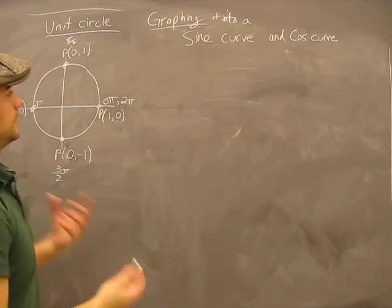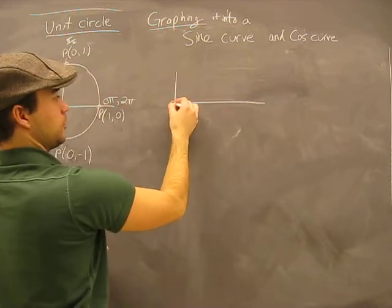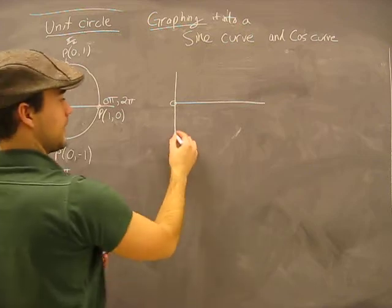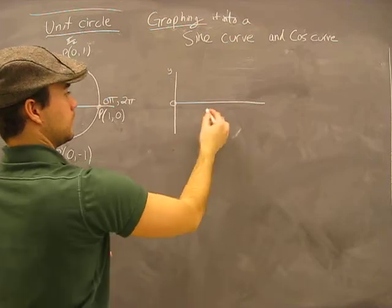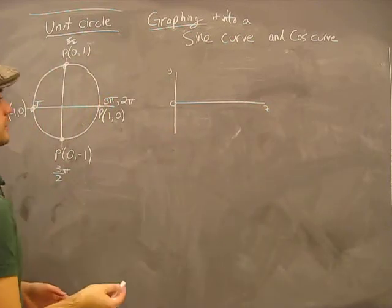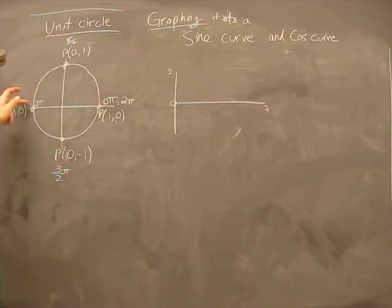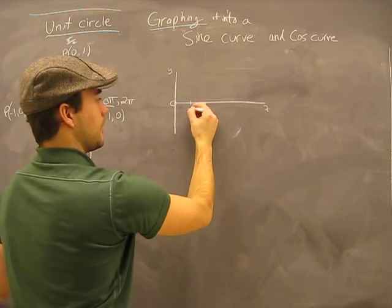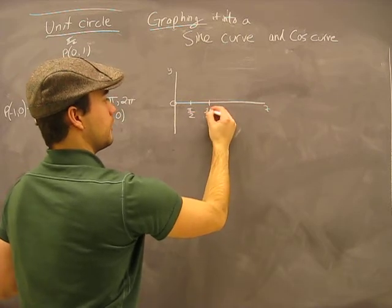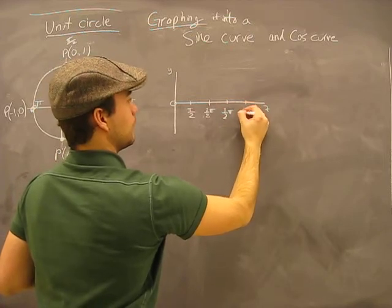If we're going to graph a sine curve, I'm going to start with zero on the x-axis. The zeros are our starting point. I know I have intervals at pi halves, pi, three pi halves, two pi, so I'm going to put those intervals down: pi over two, pi, three pi over two, and two pi.